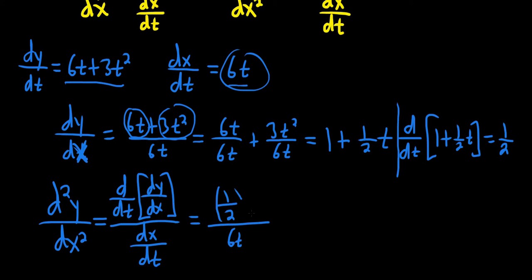So it's 1/2 divided by 6t, which is the same thing as 1/2 times 1 over 6t. Right? Division is multiplication by the reciprocals. So this is 1 over 12t.